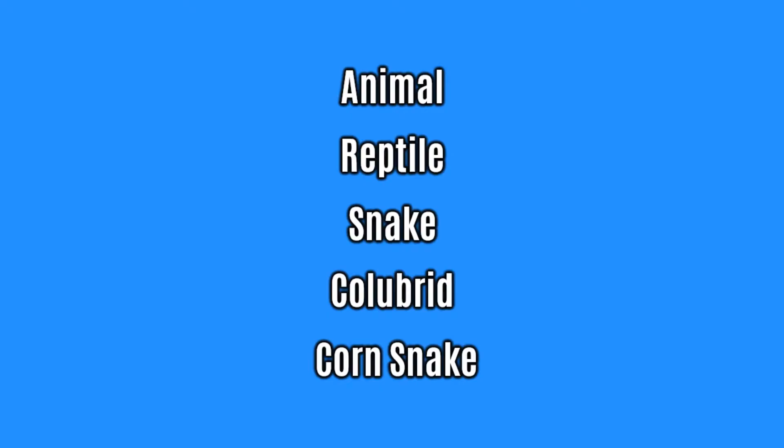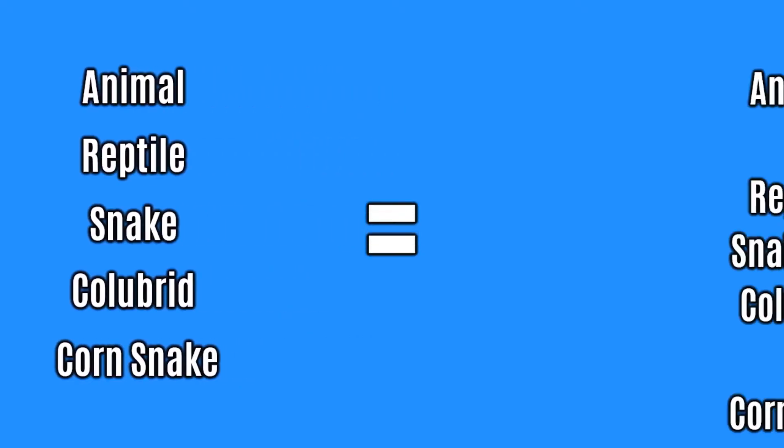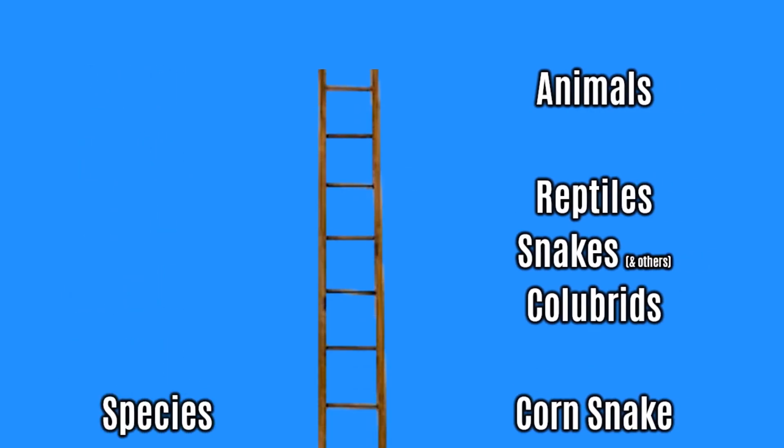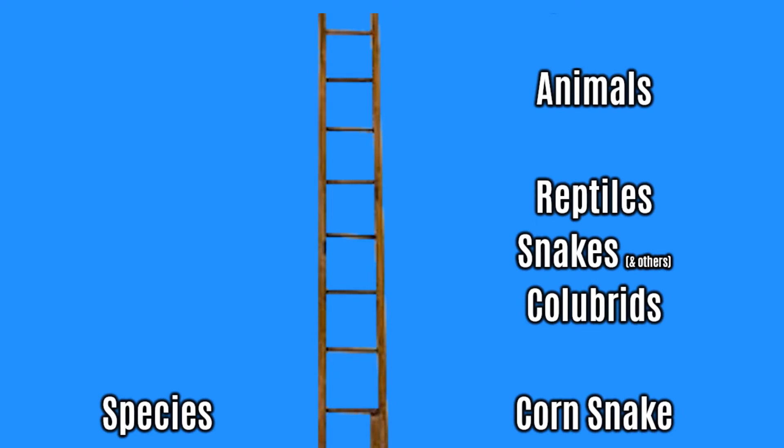...if you'd never heard of reptiles and snakes before, you wouldn't then know whether a reptile was a kind of snake, or a snake was a kind of reptile. We already know that the lowest rung on this ladder is labelled the species rung, so all we have to do is come up with labels for the other rungs, and we've solved the problem as it stands.